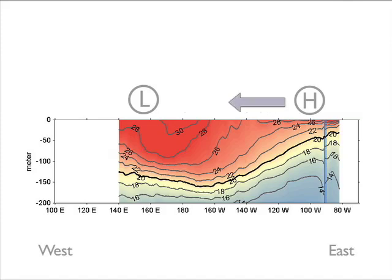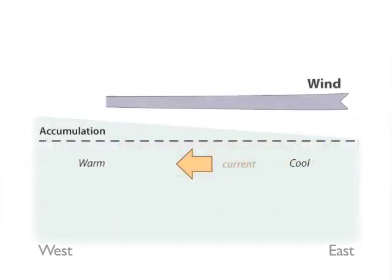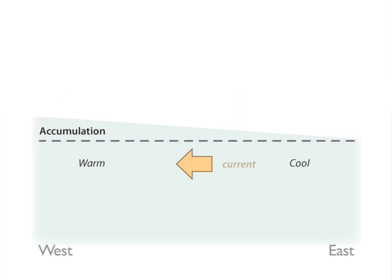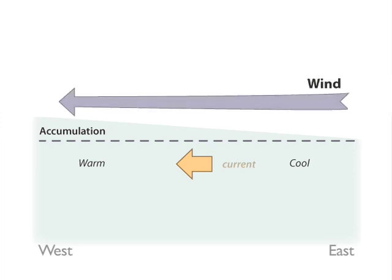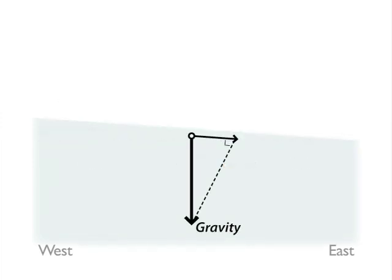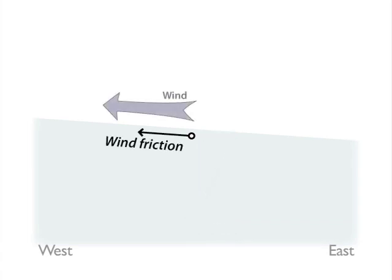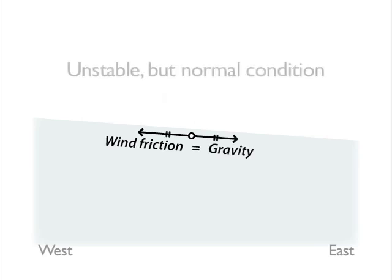The westward air flow near the surface of the ocean causes water to move west, resulting in a slightly higher surface elevation in the westward region compared to the eastern region. The natural inclination of water to equalize surface height due to gravity is counterbalanced by the frictional force of the westward wind. These equal and opposite forces are an unstable but normal condition in the Pacific region.